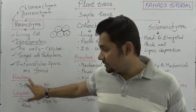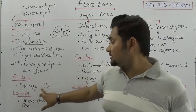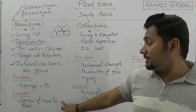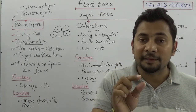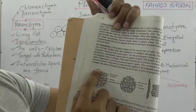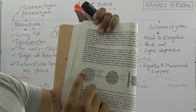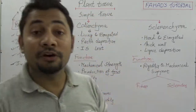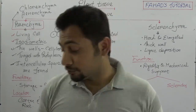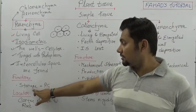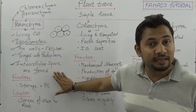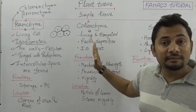The main functions of parenchyma are storage and photosynthesis. Parenchyma is mostly found in the cortex of the stem and root, and aerenchyma is found in aquatic plants. Parenchyma cells help organize the body parts of plants to produce, conduct, and store food. When studying parenchyma, remember the keywords that help distinguish it from colenchyma and sclerenchyma.